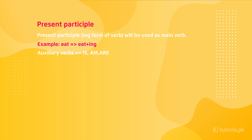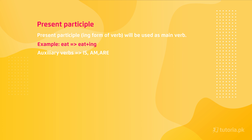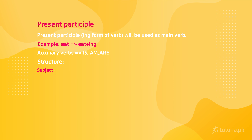If the subject of the sentence is 'I,' then the auxiliary verb 'am' will be used. If the subject is 'he,' 'she,' 'it,' or any singular noun, then the auxiliary verb 'is' will be used. And if the subject is 'they,' 'we,' 'you,' or any plural noun, then the auxiliary verb 'are' will be used.